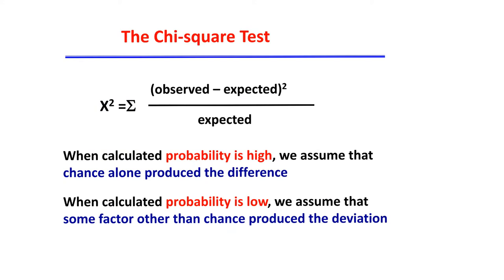To use a chi-square test, the first thing you do is determine expected results. You count your individual phenotypes in your experiment to get your observed number, then calculate expected results from the total number of progeny. Once you have that, you calculate the chi-square number as the sum of all squared differences between observed and expected results, divided by the expected results. This yields a single number — let's assume our number is 5.